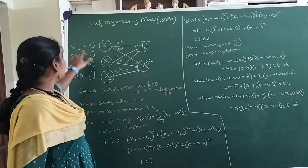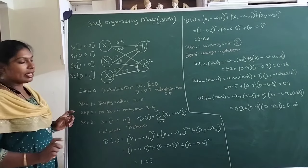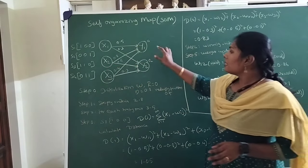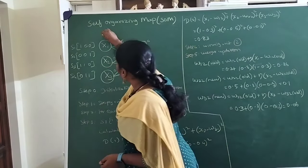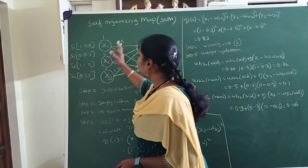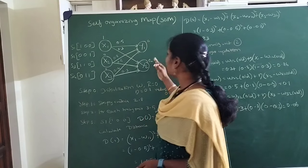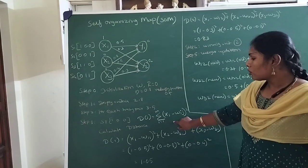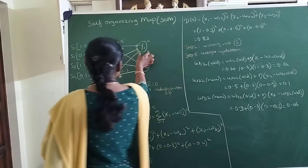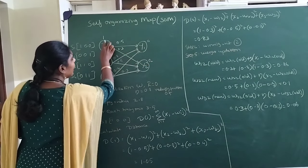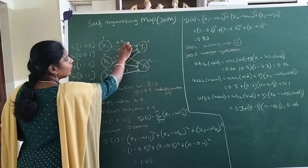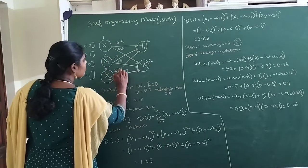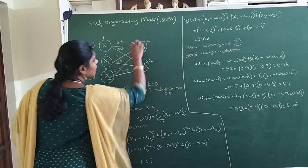Now I take the first input pattern: 1, 0, 0. I present it to the network and find the distance between the presented input and the clusters using the Euclidean distance formula. For cluster C1, I calculate x1 minus w as 1 minus 0.5 the whole square, x2 minus w as 0 minus 0.8 the whole square, and x3 minus w as 0 minus 0.4 the whole square — considering all links connected to C1.